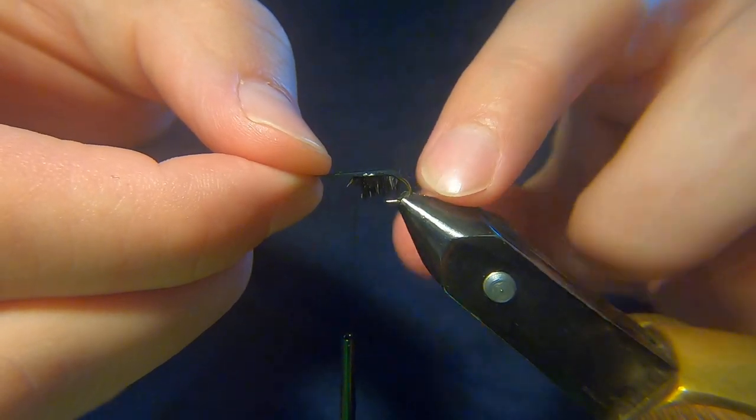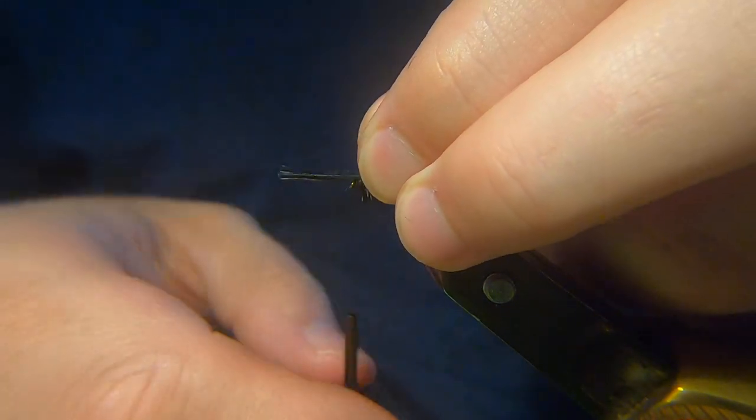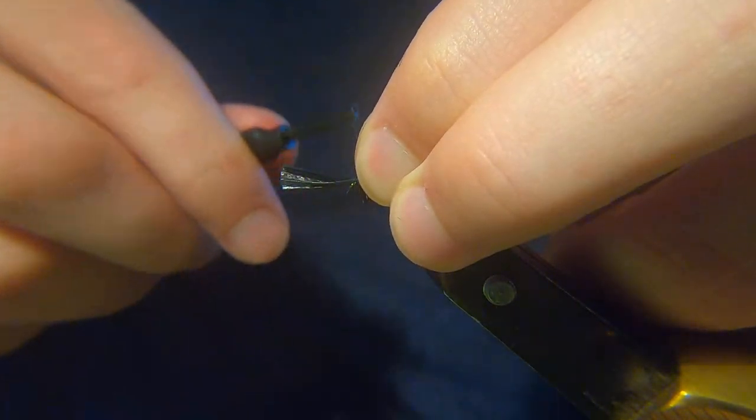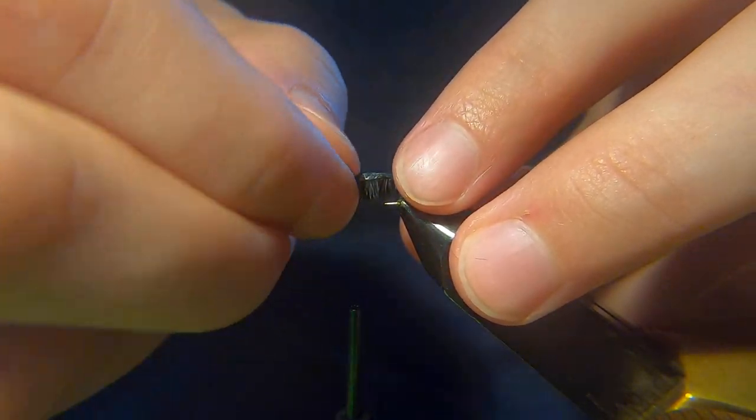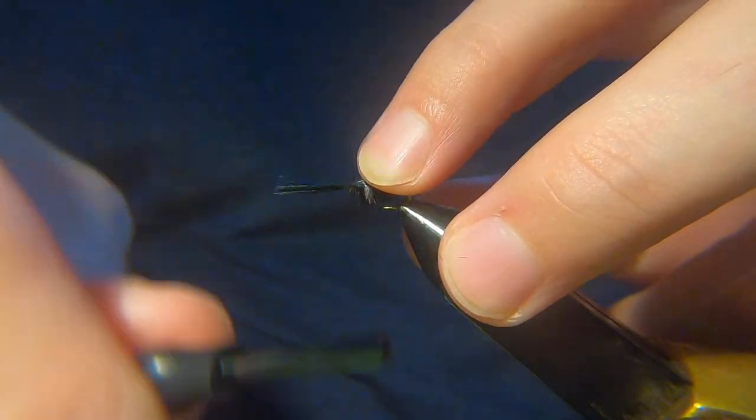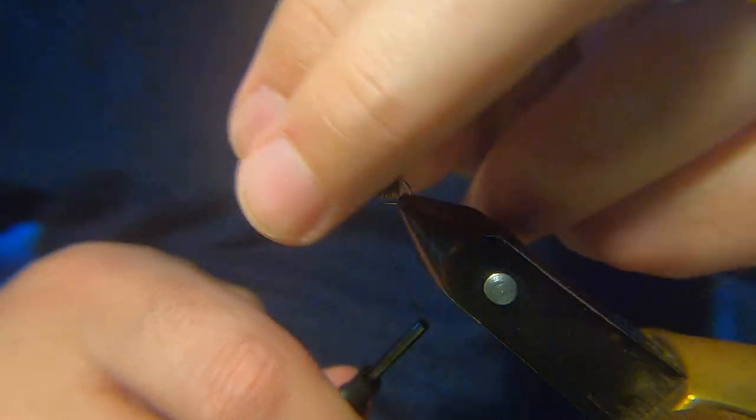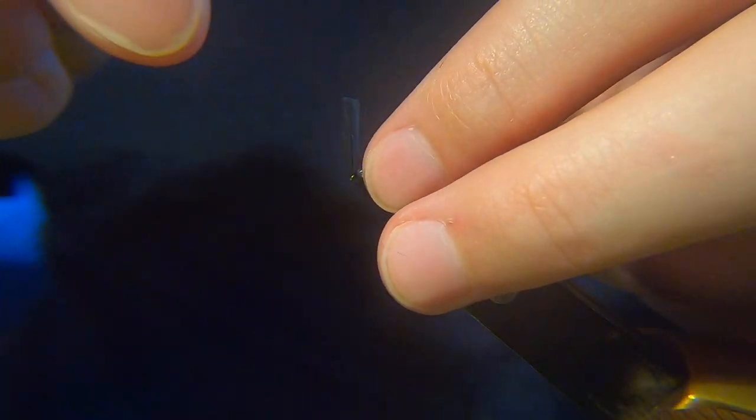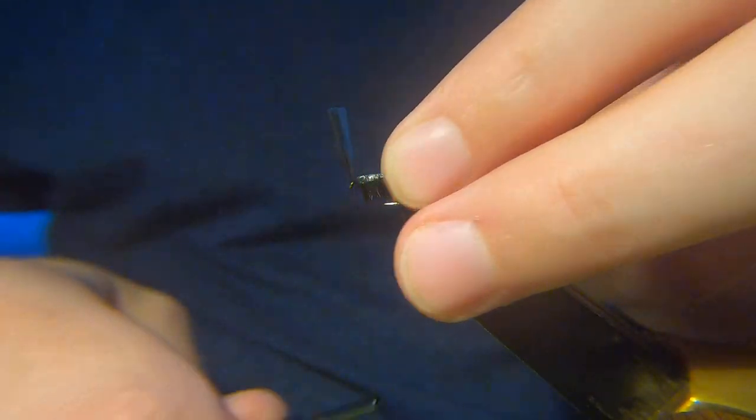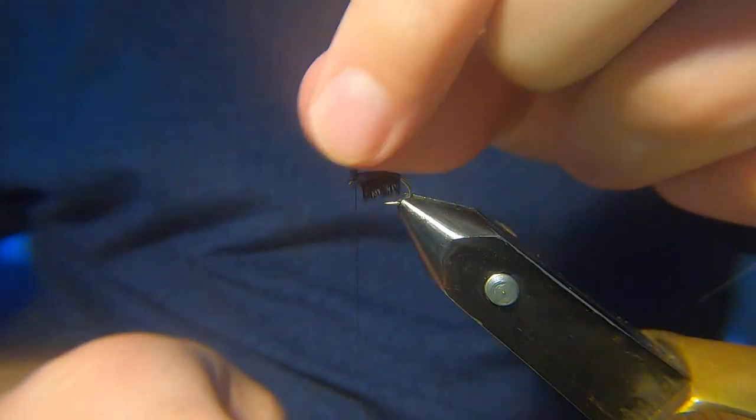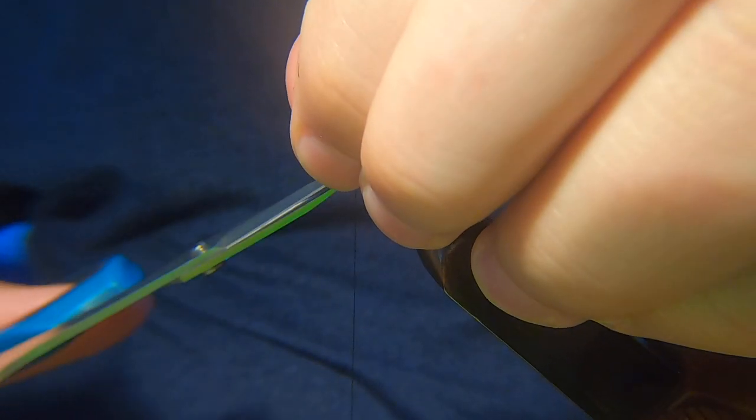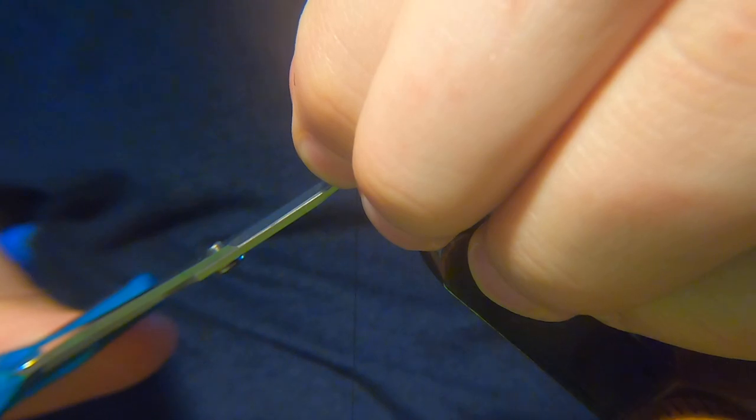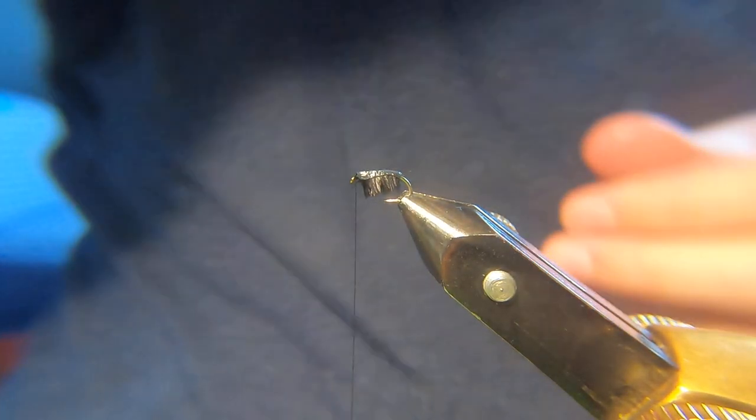I mean you could have it... We used to tie them originally on curved hooks. So we'd tie them like a B110 or something like that. And you get a different kind of profile to the fly. I quite like them on the straighter hooks. I always found them much better on the straighter hooks. Just trim that away.